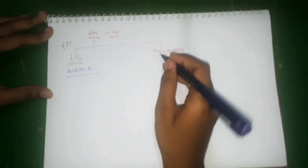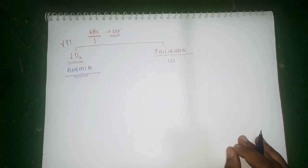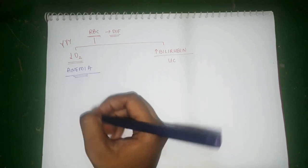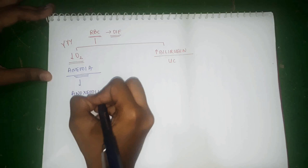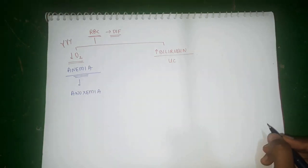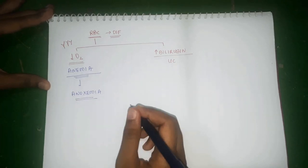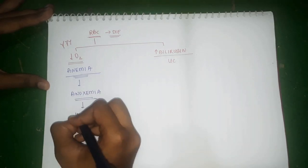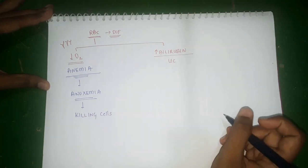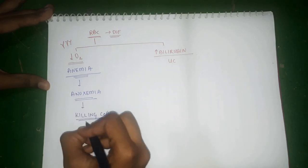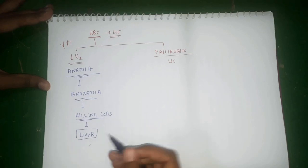If this anemia is profound, with too much destruction of RBCs, the RBCs are not able to carry enough oxygen to the cells of the body, leading to anoxemia — a condition where the oxygen in the fetal blood is insufficient to supply all the cells. Anoxemia will start killing cells and affect different organs of the body. One such organ affected will be the liver, which we will return to shortly.